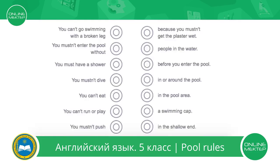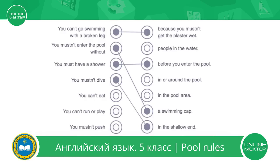Are you ready to match the two halves of the sentences? Good. First sentence: you can't go swimming with a broken leg because you mustn't get the plaster wet. You mustn't enter the pool without a swimming cap. You must have a shower before you enter the pool. You mustn't dive in the shallow end because it is dangerous. You can't eat in the pool area. You can't run or play in or around the pool. You mustn't push people in the water.